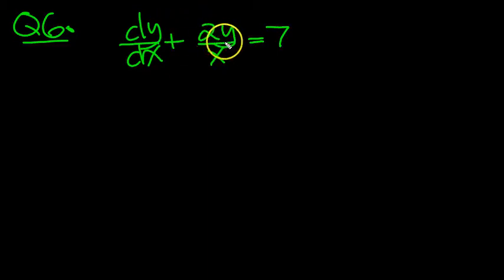dy/dx plus 2 over x times y equals 7. Everything's in standard form, so let's circle the p. Here it is here, it's the object here, and that's p.